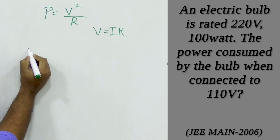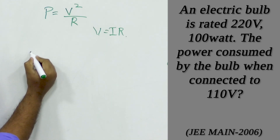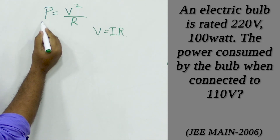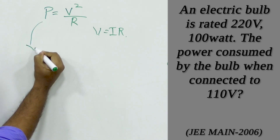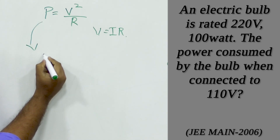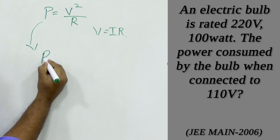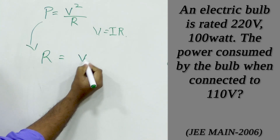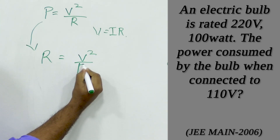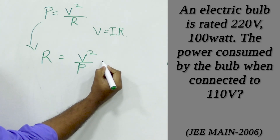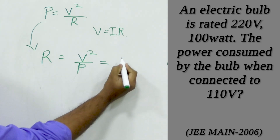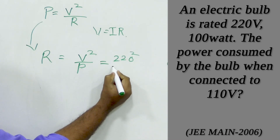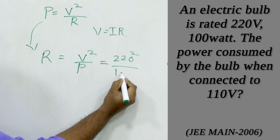First we have to find out the resistance of the bulb. That we will get from the relation P is equal to V squared by R, from where R is equal to V squared by P, which is equal to 220 squared divided by 100.